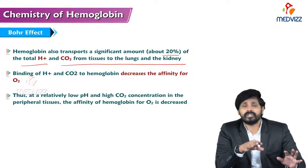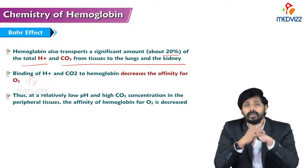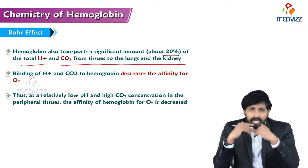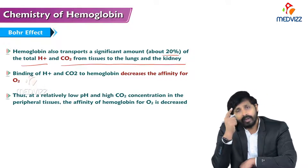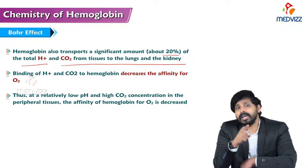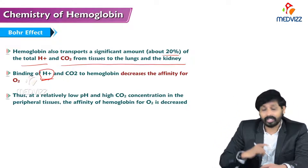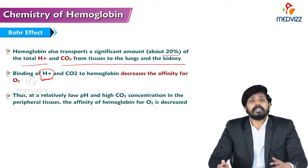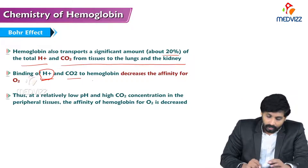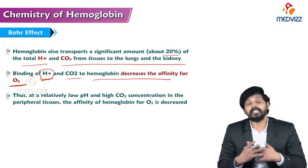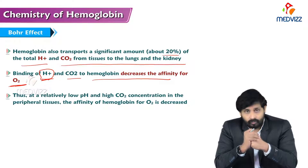As hemoglobin takes oxygen from the lungs to tissues, it unloads oxygen at the tissues inside cells and picks up CO2 produced at the tissue level, bringing it back to the lungs where it is expelled. Meanwhile, hemoglobin also carries hydrogen ions — not only to the lungs but also to the kidneys. pH is defined as the negative logarithm of hydrogen ion concentration. Binding of hydrogen ions and CO2 to hemoglobin decreases its affinity for O2, meaning hemoglobin's affinity towards CO2 and hydrogen is greater compared to O2.